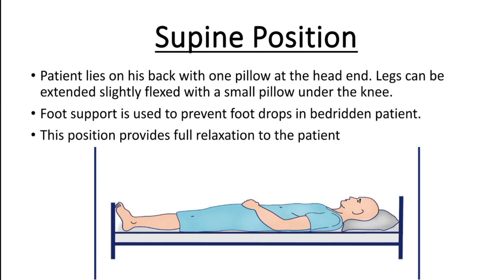In supine position, the areas we assess include: head and neck, anterior thorax and lungs, breast, axilla, heart, abdomen, and extremities.